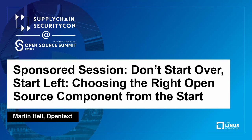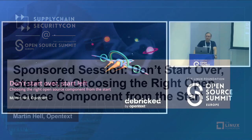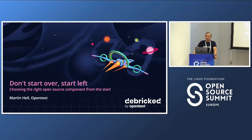My name is Martin. I'm with Debrict, which is a company currently owned by OpenText. What we do at Debrict is offer an SCA tool — that's software composition analysis. The goal is to help customers and organizations use their open source components securely.